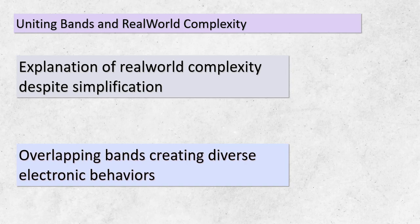We're almost at the end of our journey through band structures and metals. Let's address real-world complexity: while we've been simplifying our approach for educational purposes, you should know that bands in real materials can overlap, creating intricate electronic behaviors. These complexities are what material scientists explore in their quest to understand and engineer materials for various applications. Remember that our journey today is just the tip of the iceberg — the world of material science holds endless possibilities for discovery.